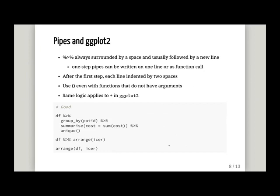Pipes — pipes are always surrounded by spaces and followed by a new line. If you have just a one-step pipe, you can write it on one line, or you can just rewrite it as a normal function argument. After the first step, everything that follows should be indented by two spaces. If you have a function that doesn't have an argument, technically you don't need to put the round brackets, but the advice is actually to put brackets even if they're not required. And if you use ggplot, it's exactly the same logic — when you put your layers, separated not by pipes but by plus signs, the same logic applies.